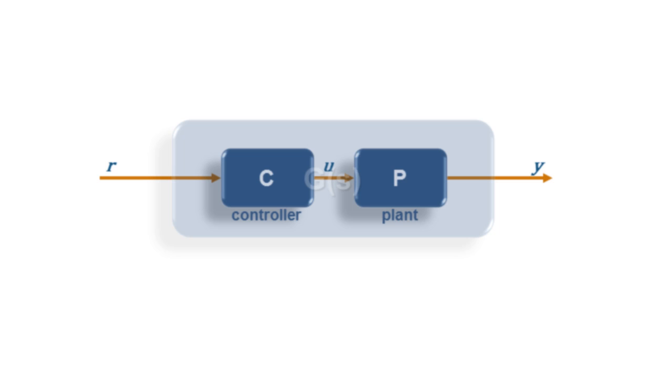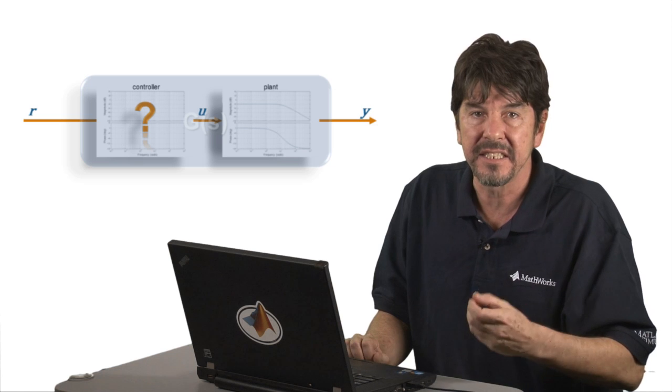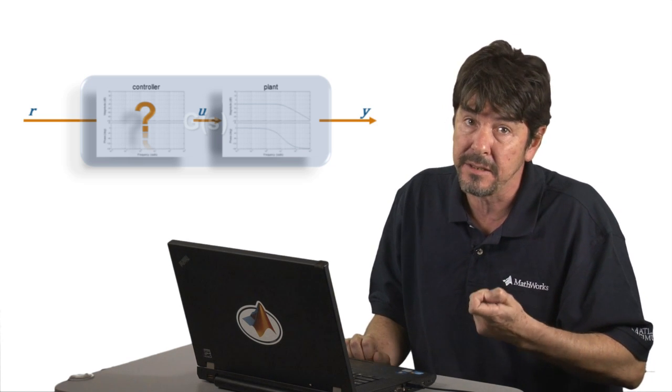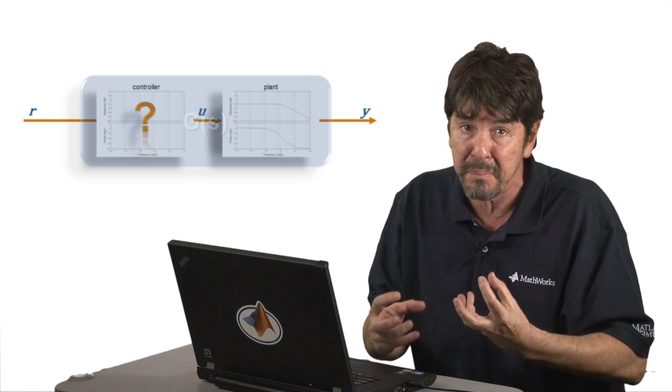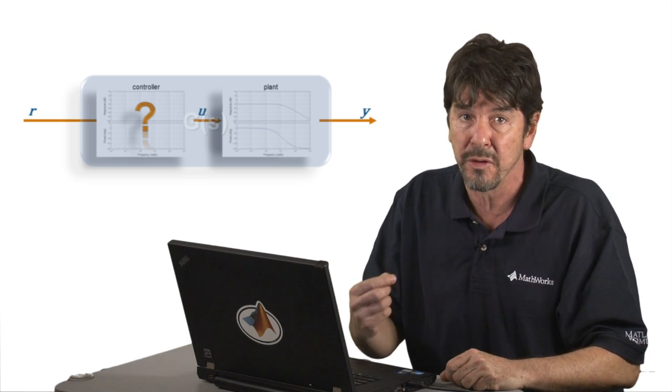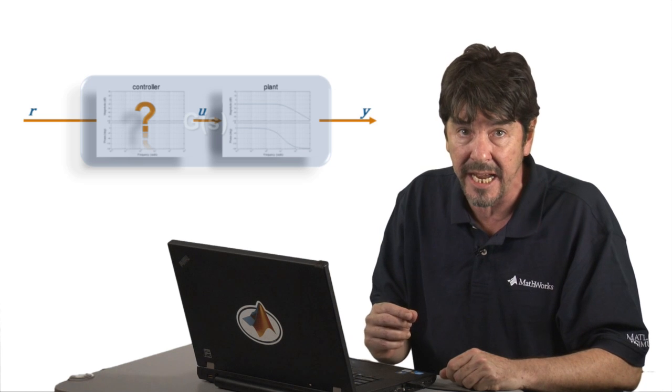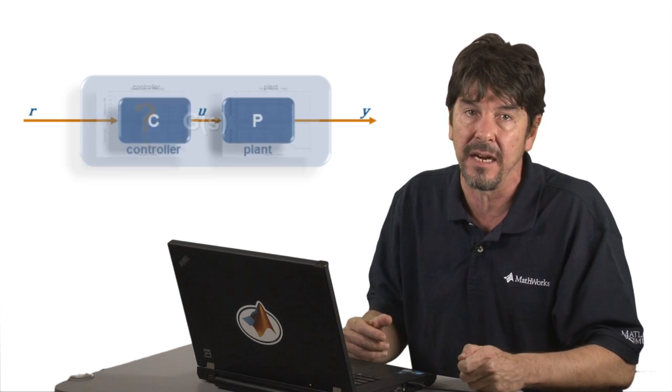The plant dynamics can be modeled using fundamental principles or experimental data or some combination of both. The challenge from a controls engineer perspective is to, given those plant dynamics, come up with the appropriate thing to put in C such that the overall system, plant and controller together, behaves in some desired way.